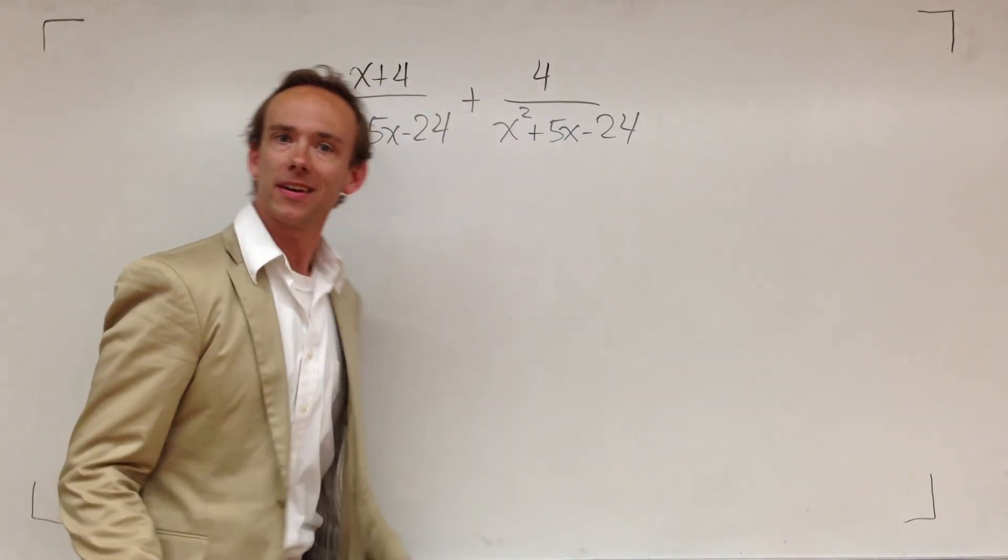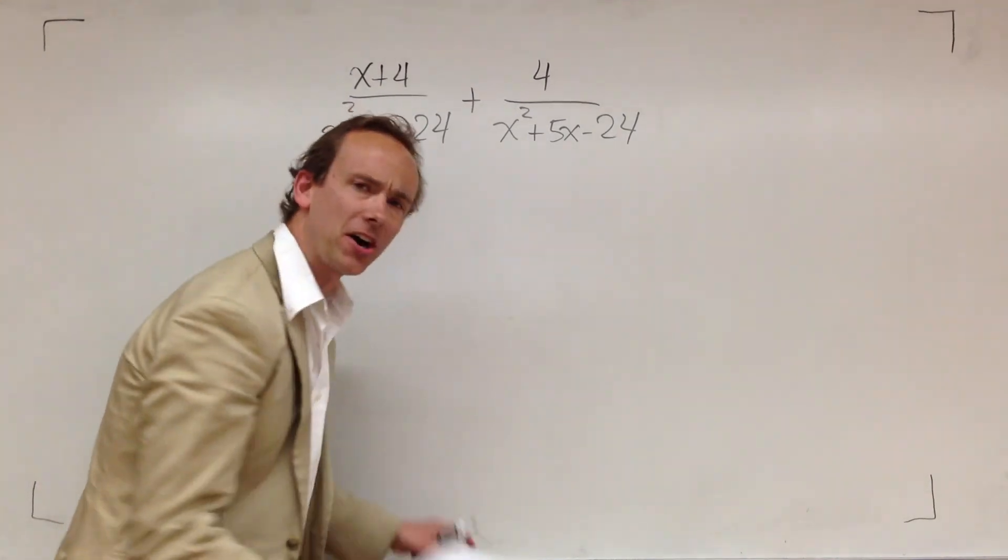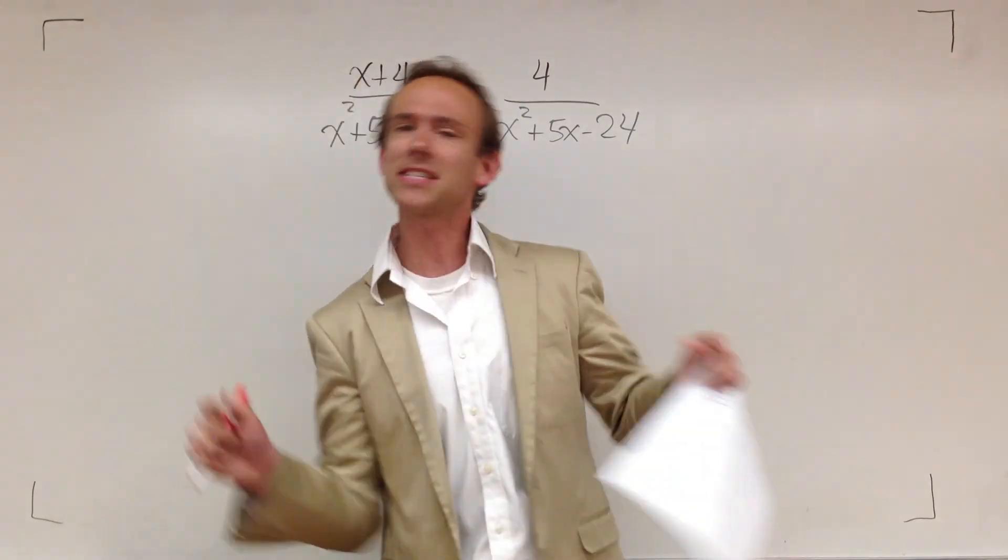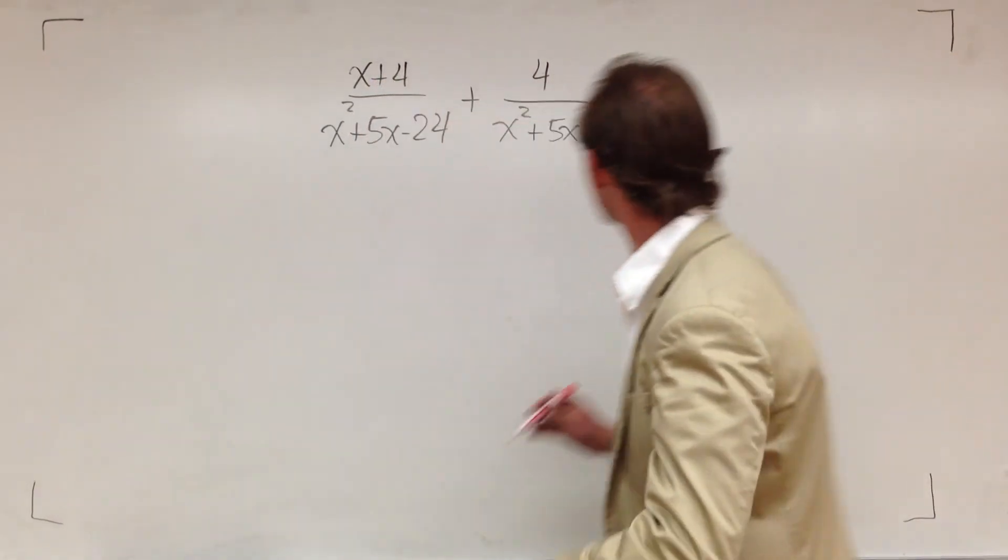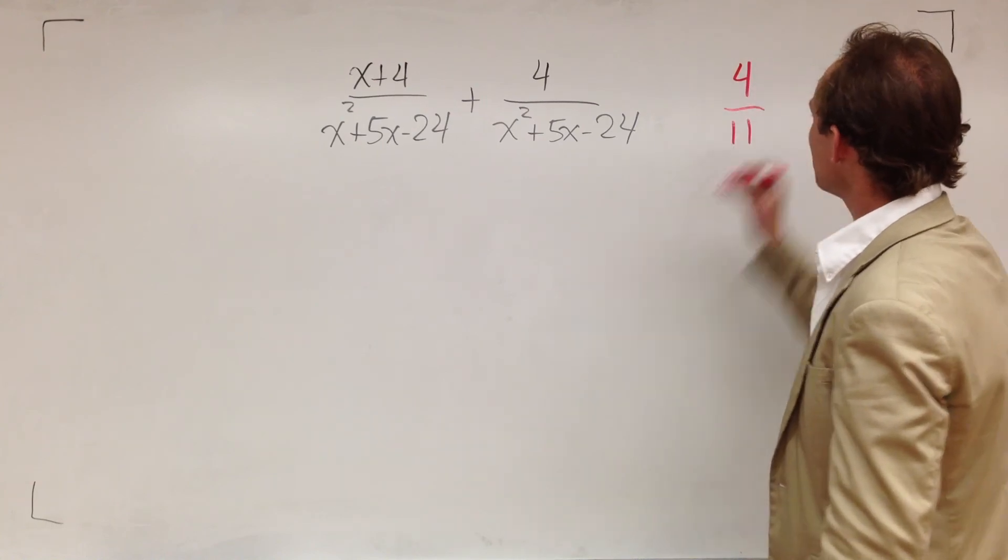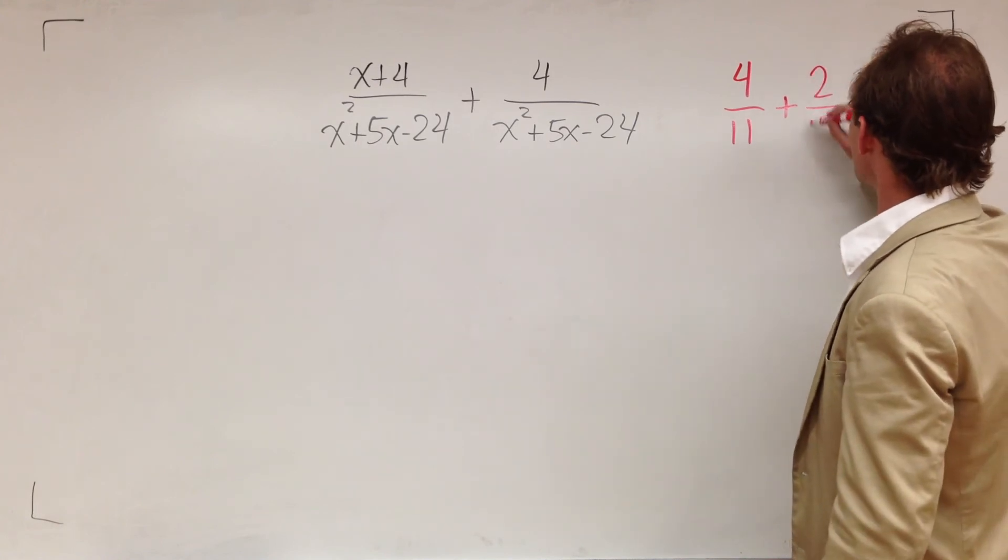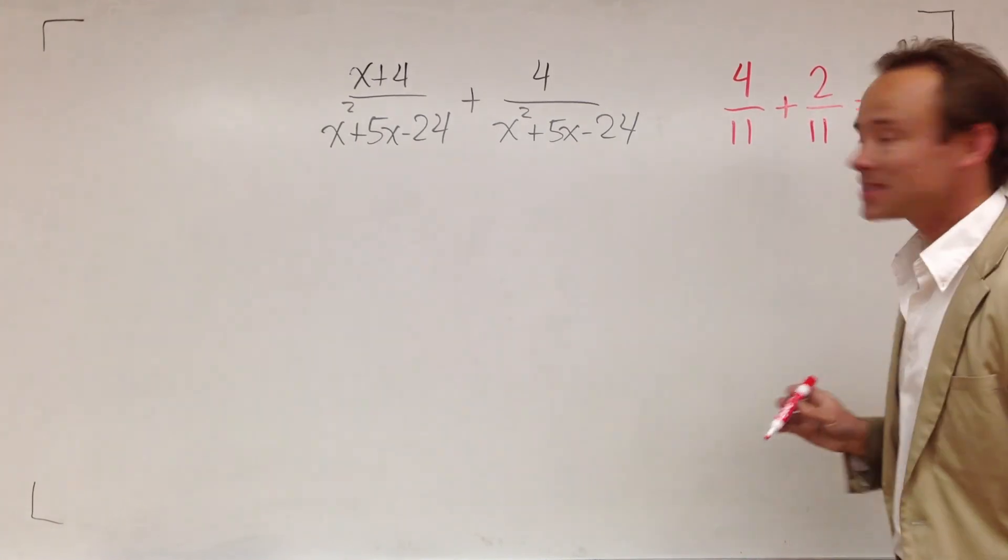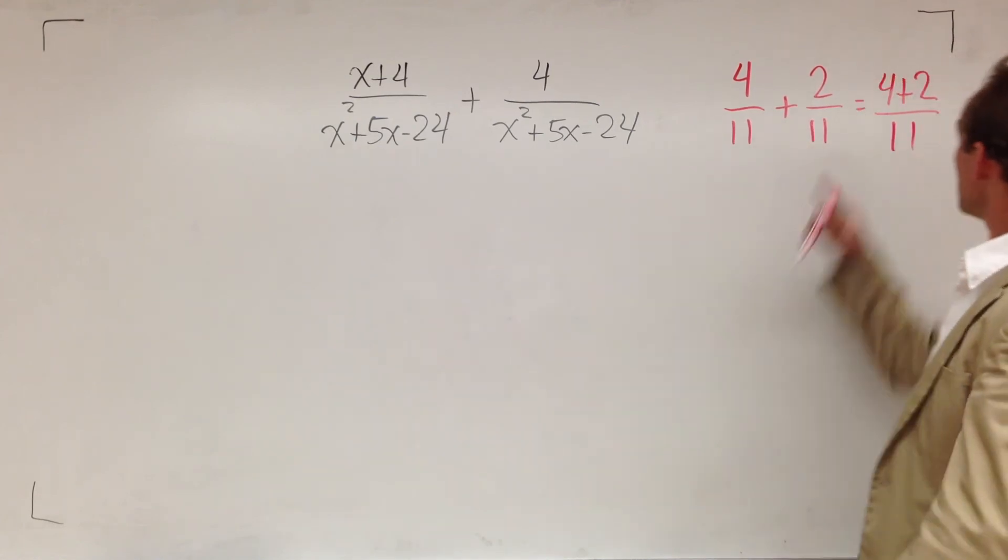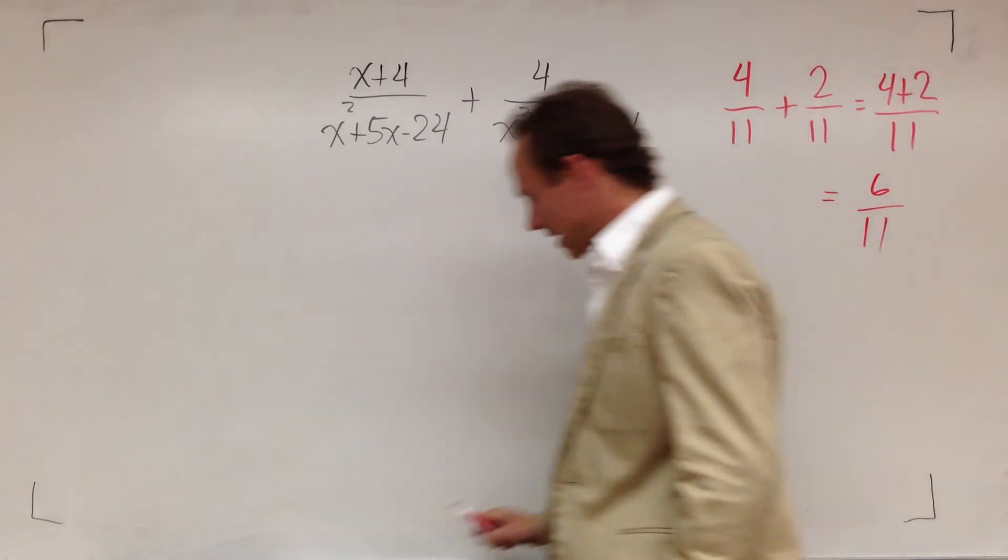This ain't no different than what you've been doing in the past. A long time ago, at some point you had a teacher do this for you. A teacher was like, four over eleven plus two over eleven equaled four plus two over eleven. And then you added the four and the two and that got you six over eleven. That's what you learned before.